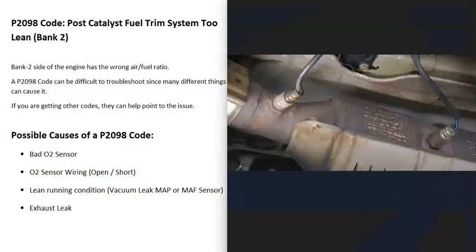What does this mean? There are sensors located on the exhaust that do two things: first, they monitor the catalytic converter, and second, they monitor how much oxygen was burnt off during combustion. They report this information back to the computer, which uses it to adjust the air-fuel ratio mixture going into the cylinders.